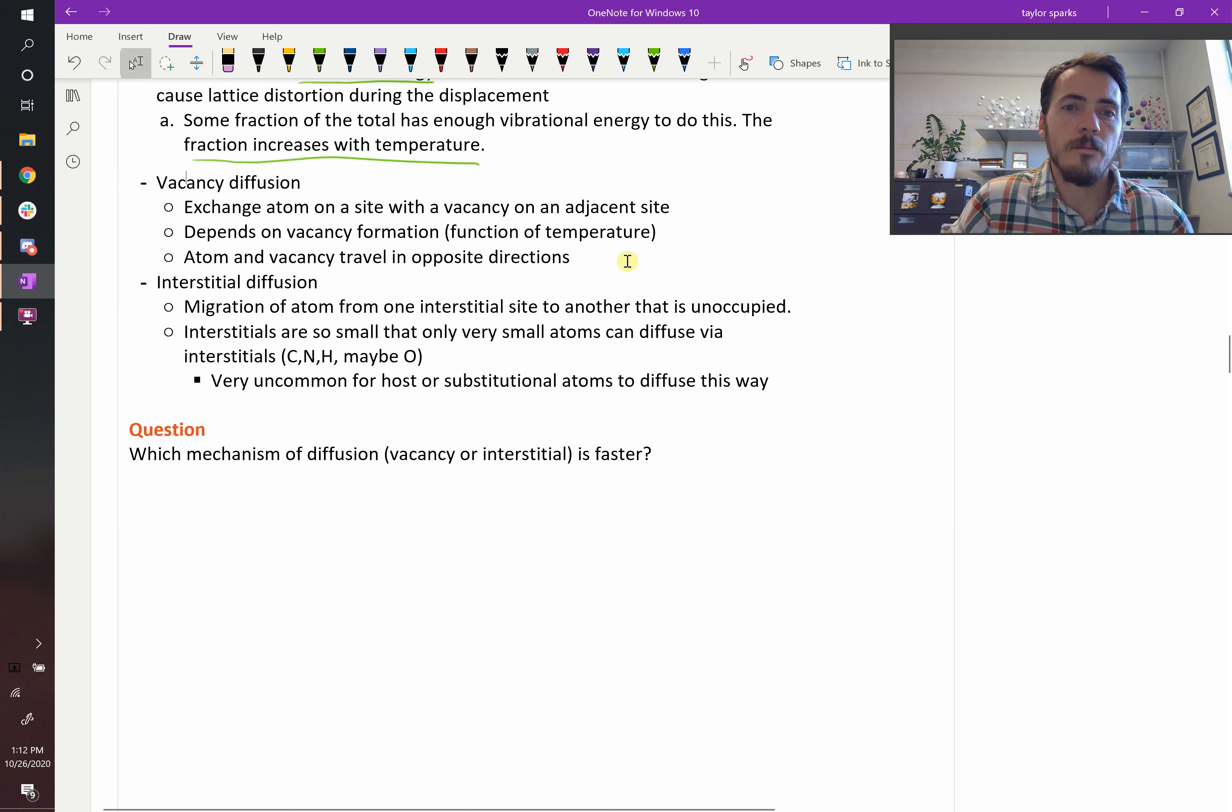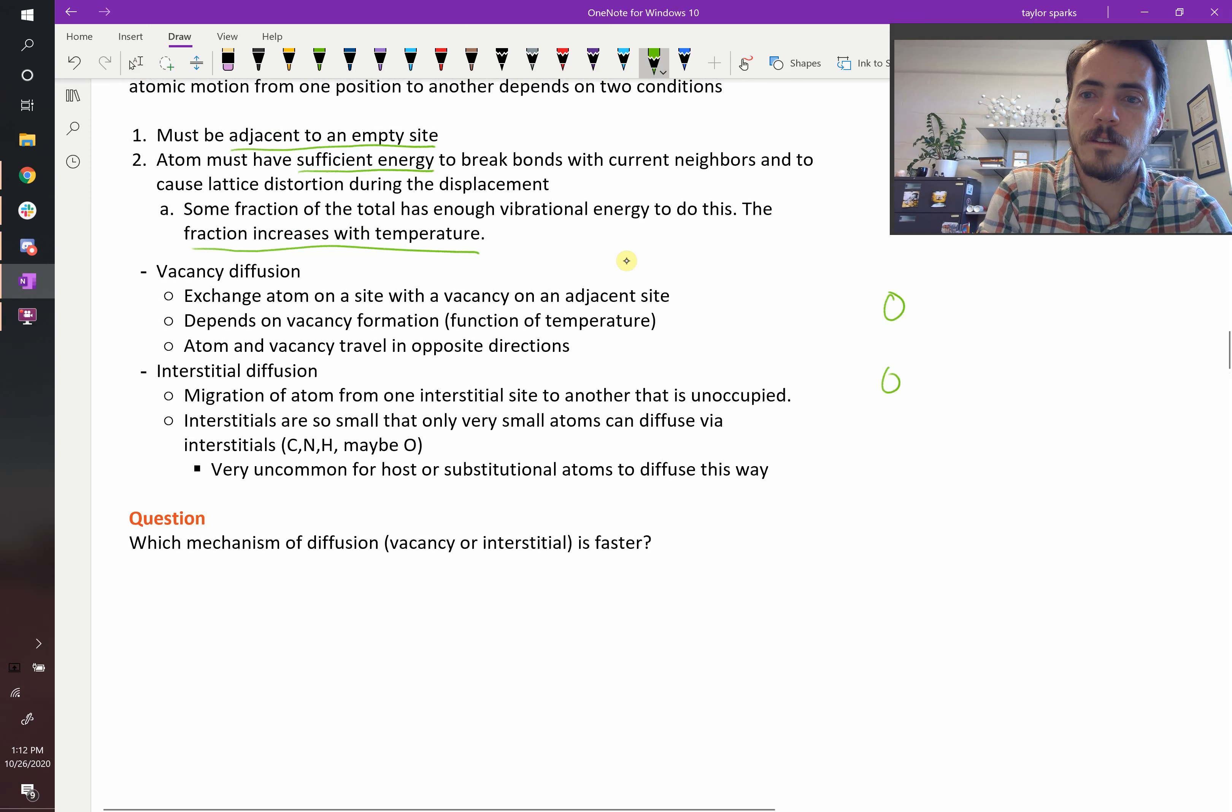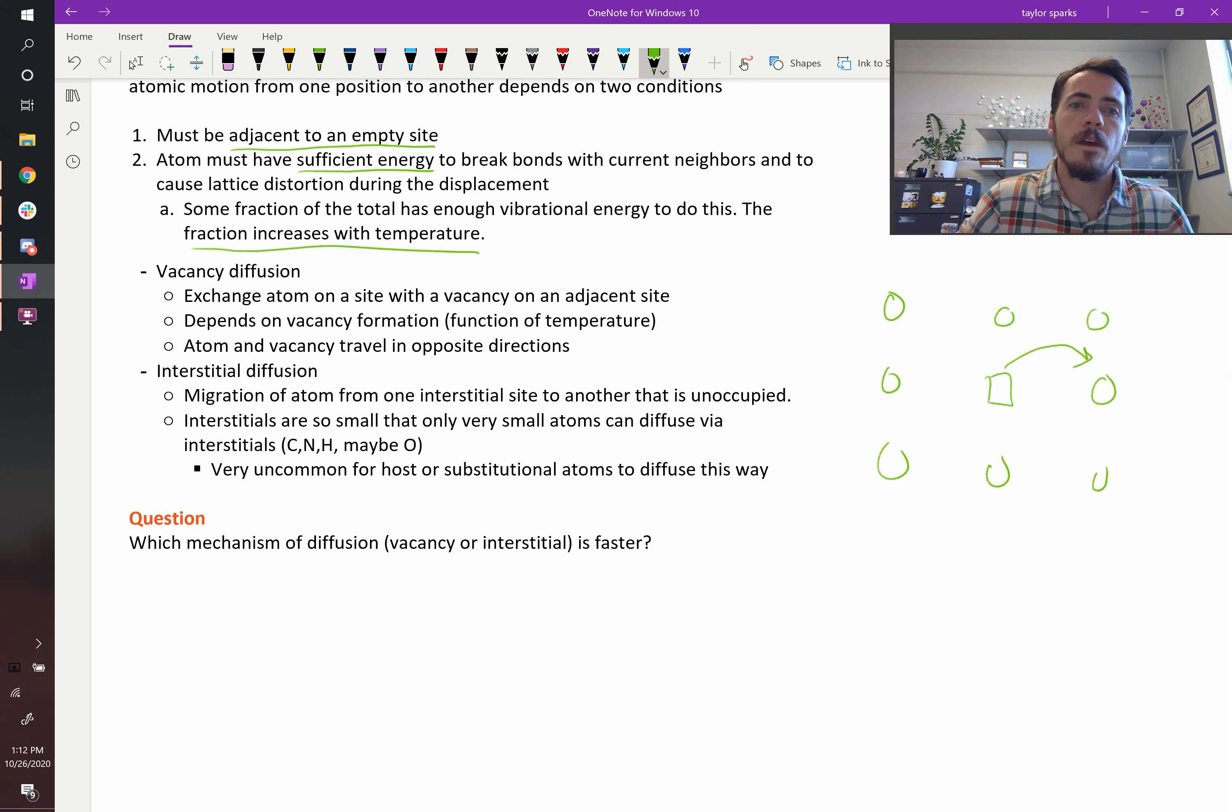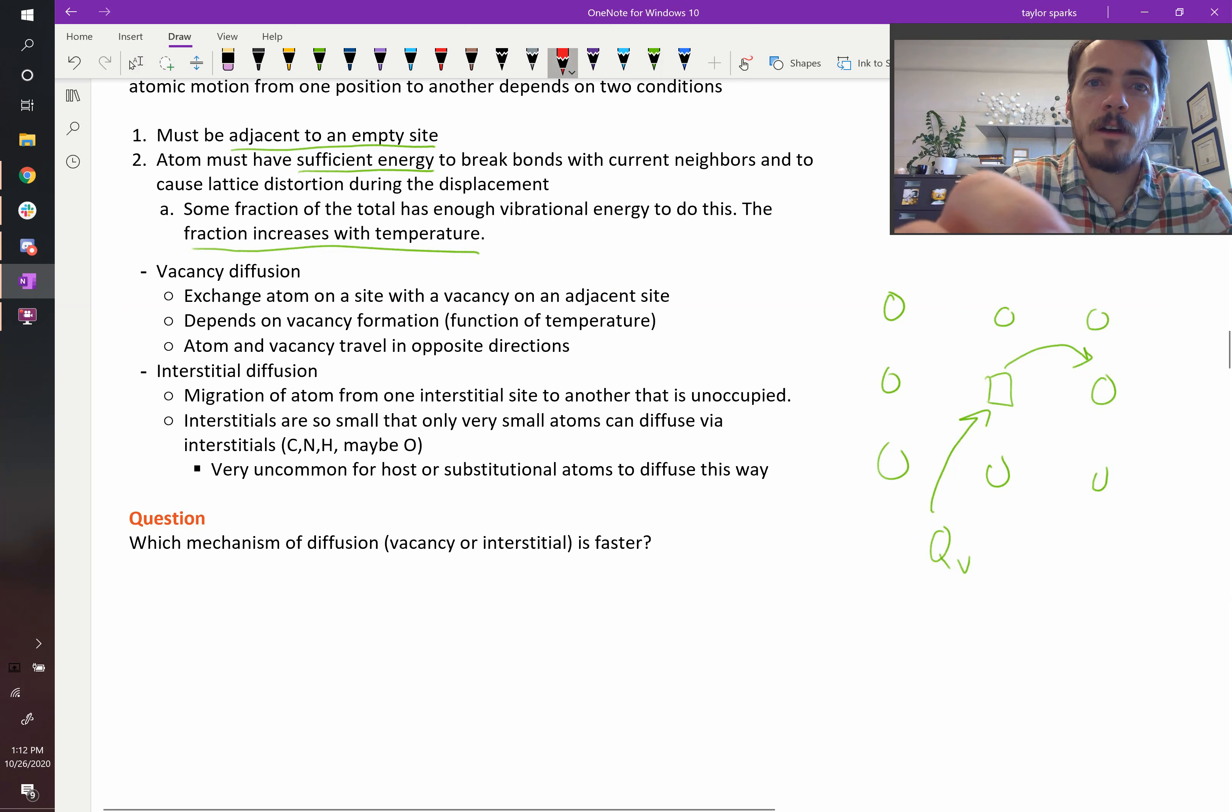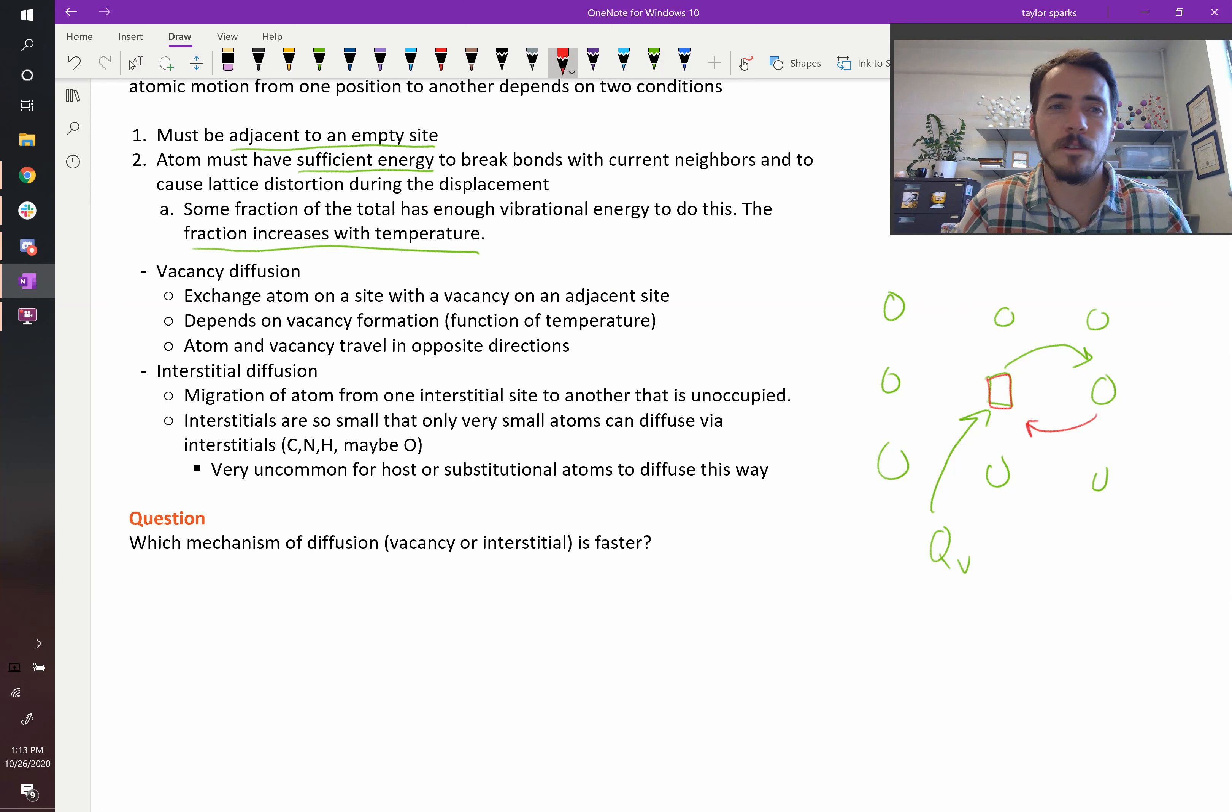Vacancy diffusion is the exchange of a site with a vacancy on the adjacent site. Imagine you've got a lattice like this with a vacancy here. It's possible for your atom to jump here and fill that vacant site. And in doing so, it creates a vacancy on the site where it used to be. So it's an exchange of this atom and the vacancy. Obviously, this diffusion rate will be dependent on how many of these vacancies there are, which in itself is a function of the vacancy activation energy, Qv. Your vacancy travels this way, but your atom traveled to the right, so they're going to be traveling in opposite directions.